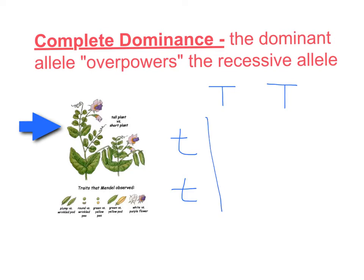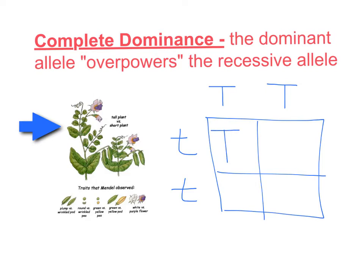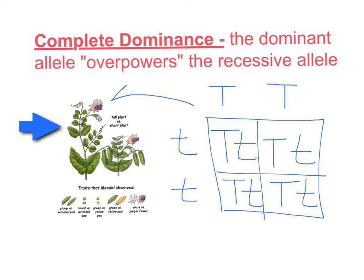Cross these two in a Punnett square, and we find that 100% of the offspring turns out heterozygous. Yet the phenotype for 100% of the offspring reflects the tall, dominant genotype.